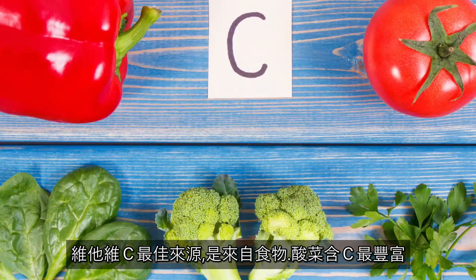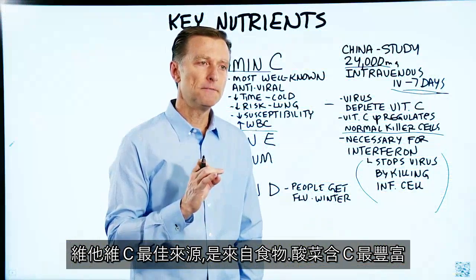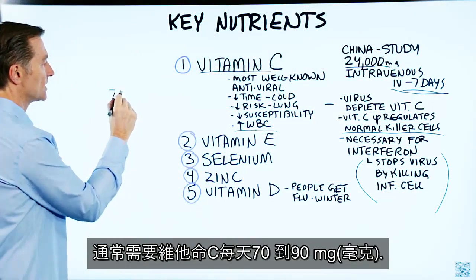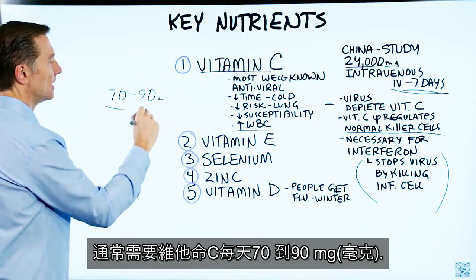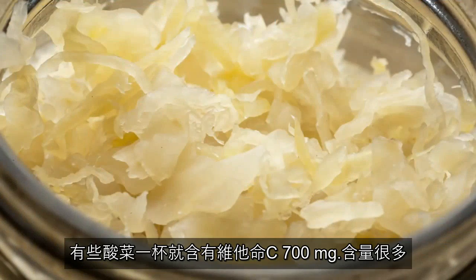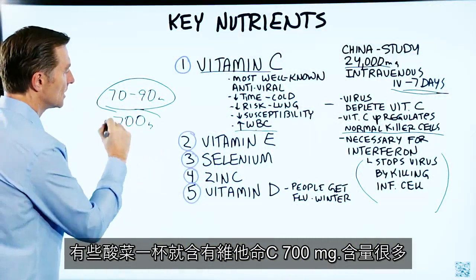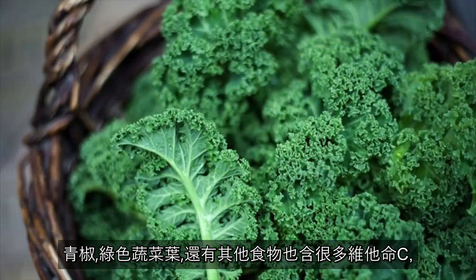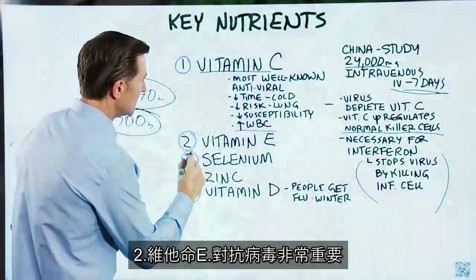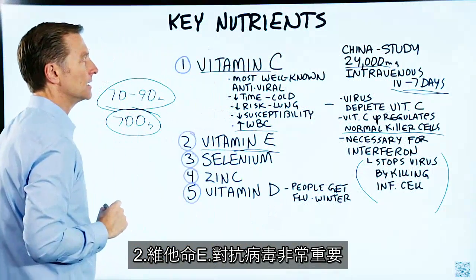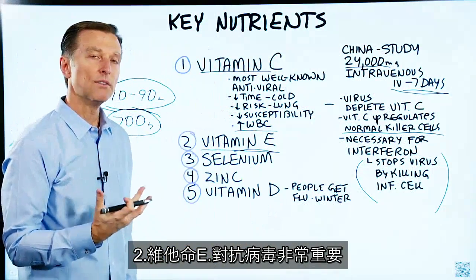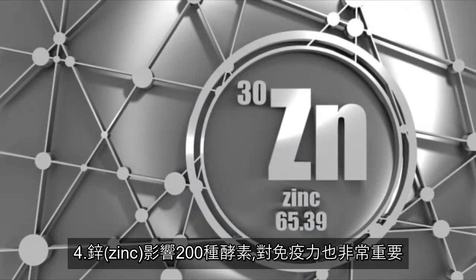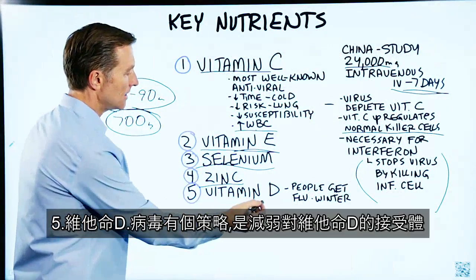One of the best ways to get vitamin C is through food. The food with the most vitamin C is sauerkraut. A person normally needs 70–90 milligrams of vitamin C per day, and certain types of sauerkraut can give you up to 700 milligrams per cup. It's also found in bell peppers, leafy green vegetables, and many other foods. Number two: vitamin E — very important for building up your resistance to viruses. Selenium is another important trace mineral. Zinc, involved in over 200 enzymes, is vital for your immune system. And of course, vitamin D.